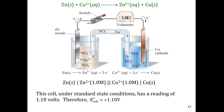Here we have our voltaic cell with both solutions at one molarity, meaning we're at standard conditions. The reading from the voltmeter — which is what you would hook up in a lab — tells you E cell. Since we're at standard conditions, this represents E° cell. For this zinc-copper voltaic cell, E° cell is +1.10 volts. If the poles were reversed, you would read −1.10 volts, which would mean you have the anode and cathode connected backwards.